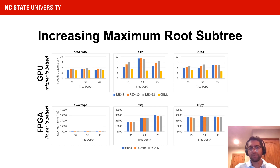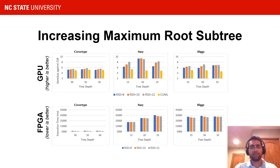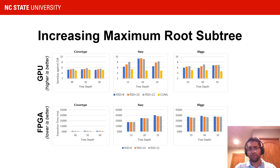The root subtree is the densest part of a tree since most leaf nodes tend to be in deeper levels. Because of this, the root subtree can be partitioned to be a larger portion of the tree without needing many empty nodes to be allocated. Our results show that while increasing the root subtree depth can be beneficial, performance improvement is generally meager.